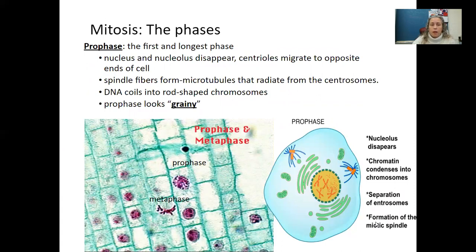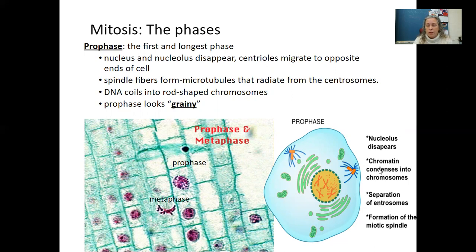In mitosis, the first phase is prophase — the longest and first phase. The nucleus and nucleolus disappear, the centrioles migrate to opposite ends of the cell, and spindle fibers form as microtubules that radiate from the centrosomes. The DNA coils into rod-shaped chromosomes. Prophase looks grainy under the microscope — the chromatin condenses into chromosomes, the centrosomes start moving to opposite ends, and the meiotic spindle or spindle fibers begin to form from those centrosomes.